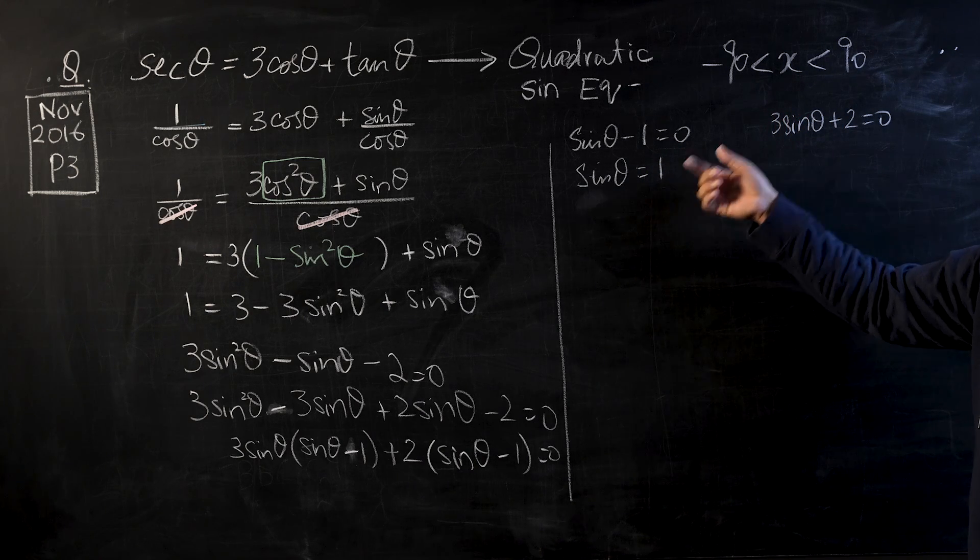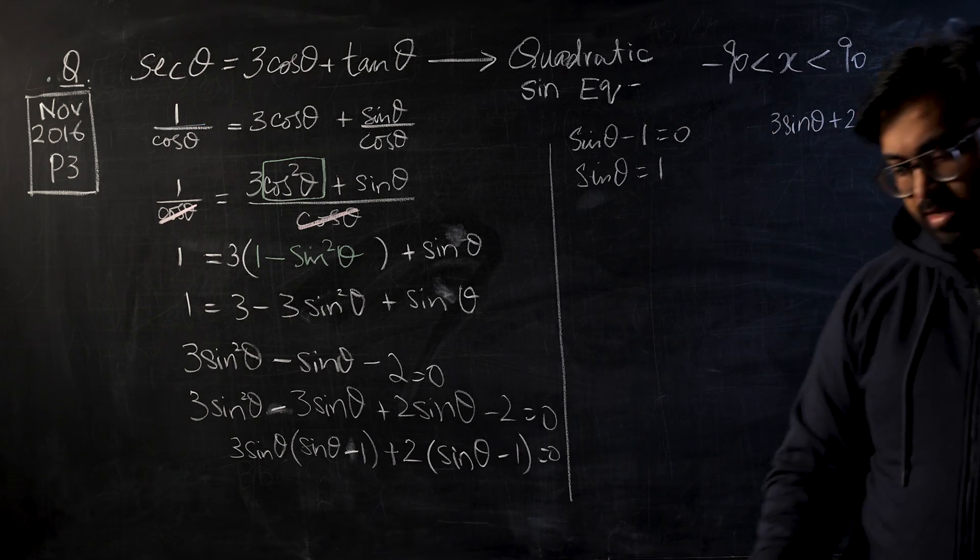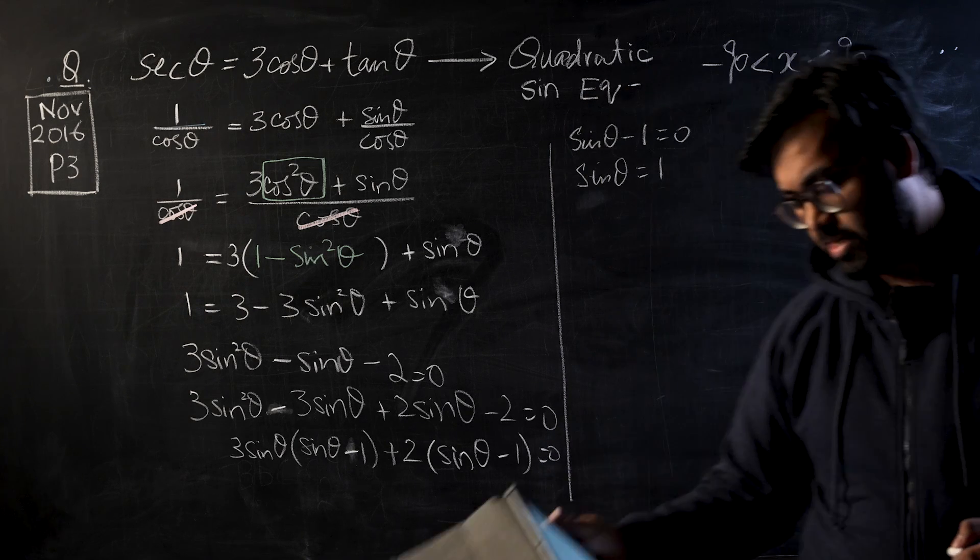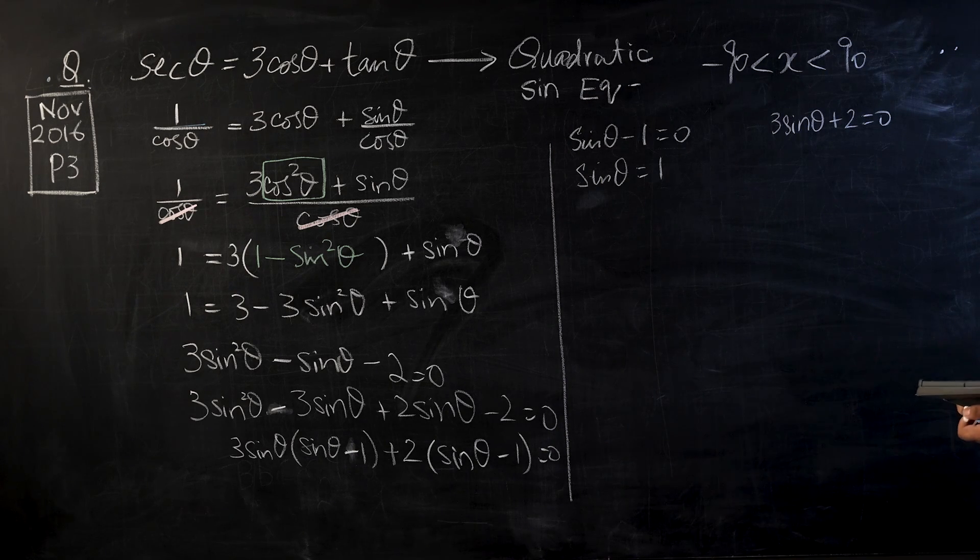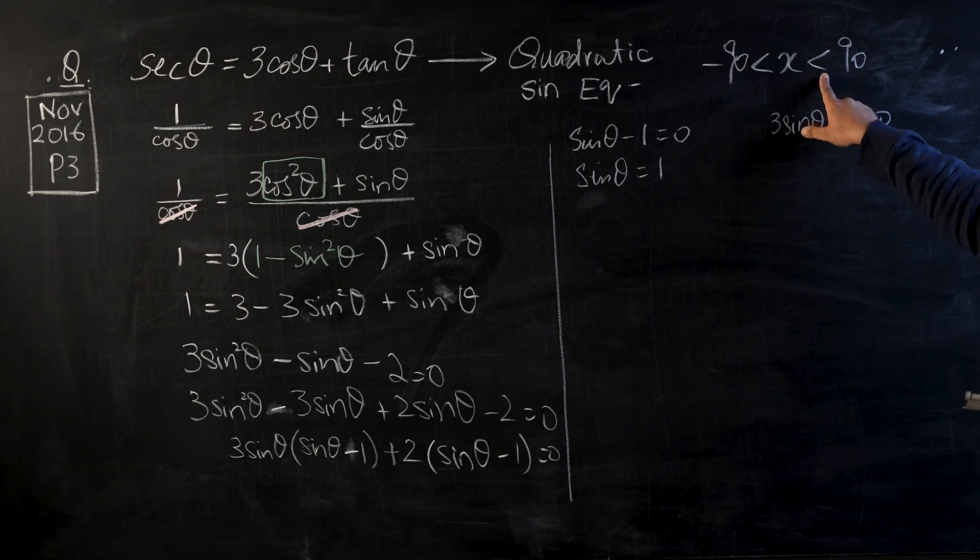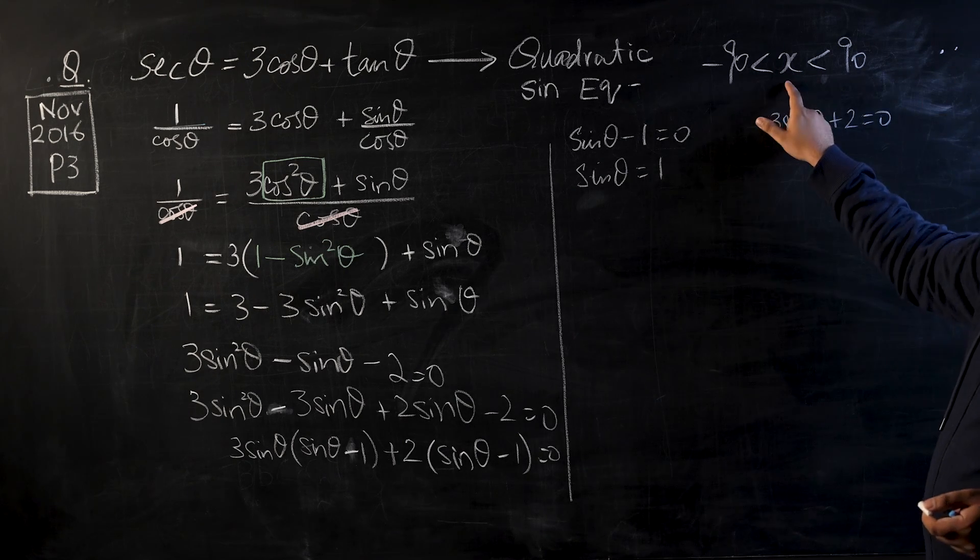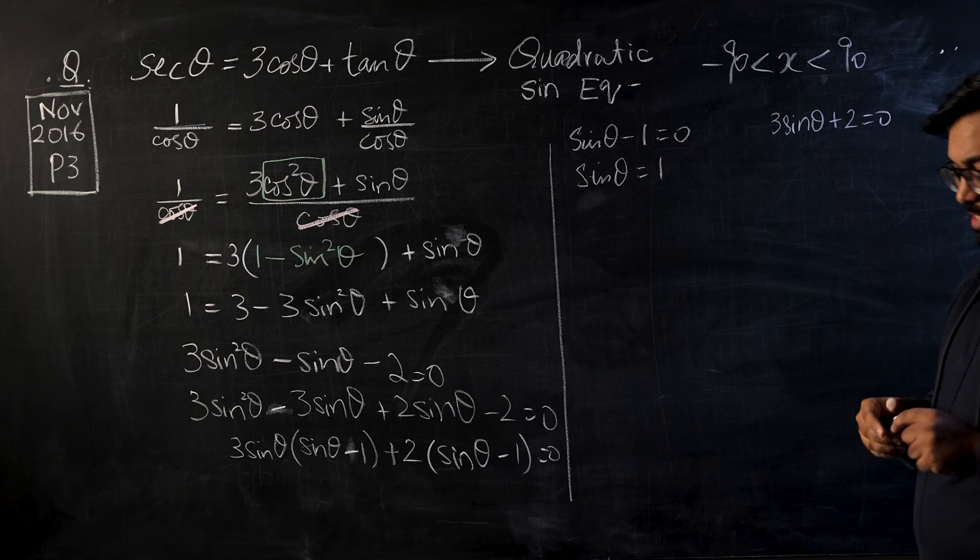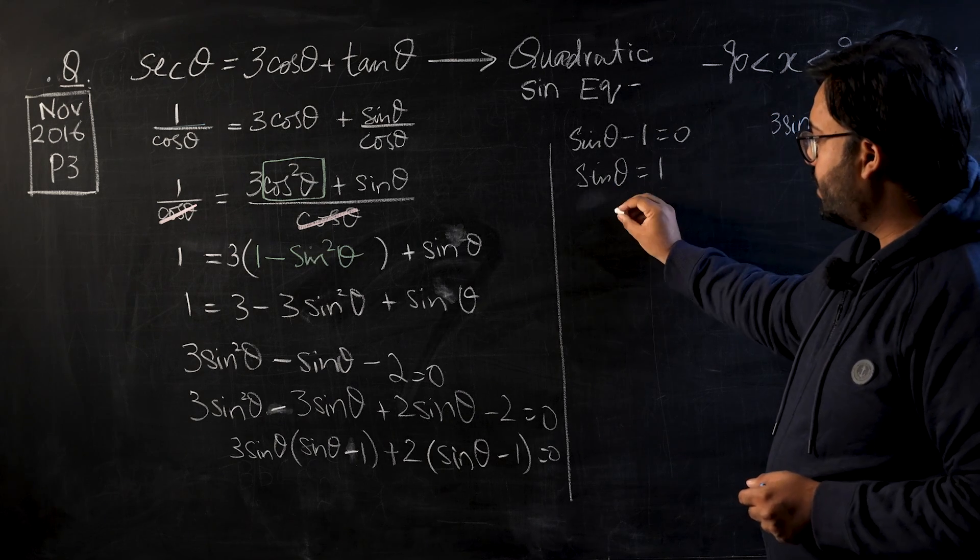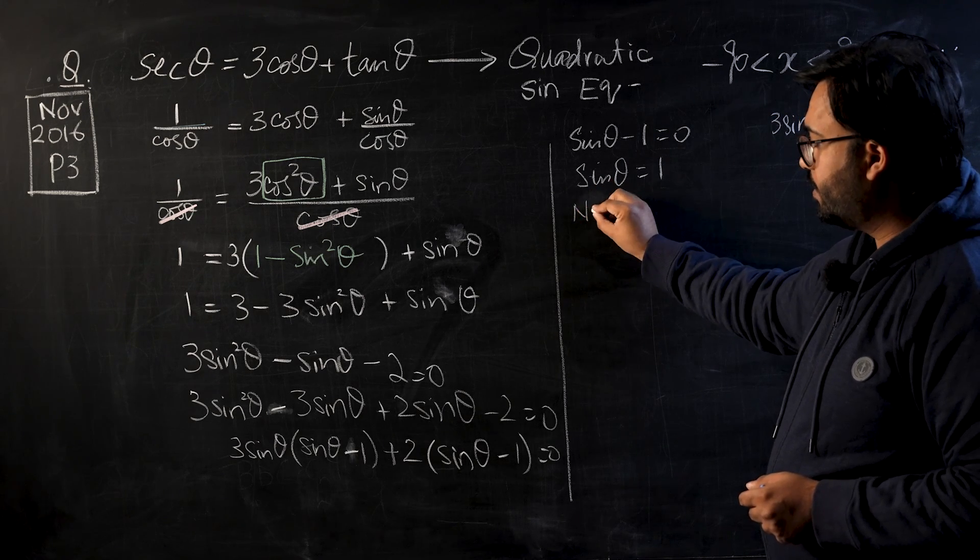Now I will have sin θ equals one over here, and we know that sine is one when the angle is 90. And if we have a look at the domain, let me have a quick look at the domain as well. So 90 is not included over here, and hence we cannot take a value for theta in this inequality.